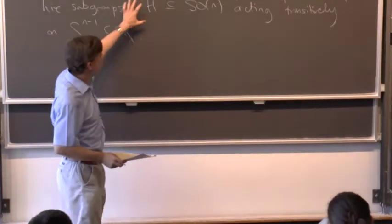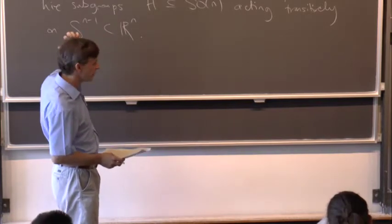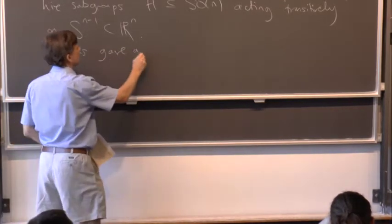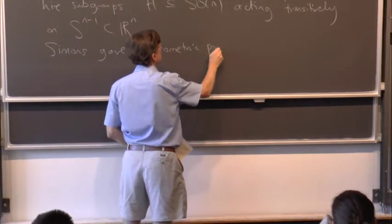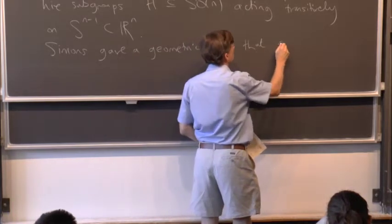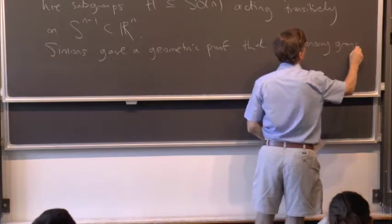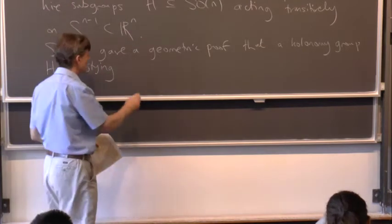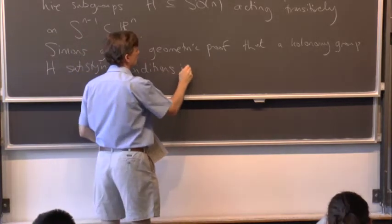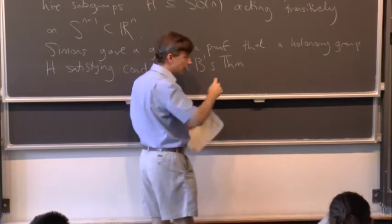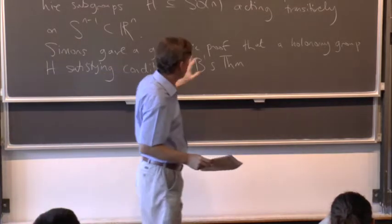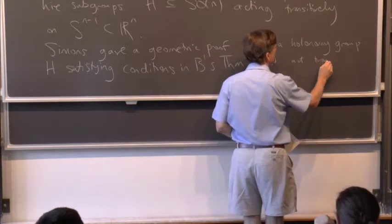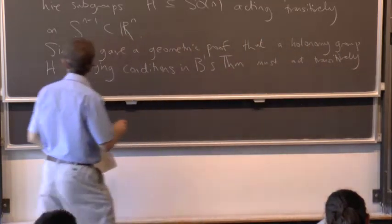So if you're prepared to accept the classification of groups acting transitively on spheres, then that gives you a kind of starting point to more or less recover Berger's list. So Simons basically gave a geometric proof that a holonomy group H satisfying the conditions in Berger's theorem, that is the manifold is simply connected, the metric is irreducible and non-symmetric, must act transitively on S^(n-1).